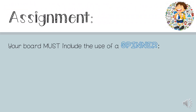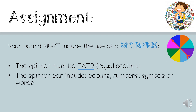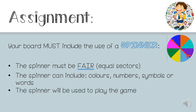Your board must include the use of a spinner. The spinner must be fair — in other words it must have equal sectors, so the sectors must all be the same size. The spinner can include colors, numbers, symbols, or words. The spinner will be used to play the game.